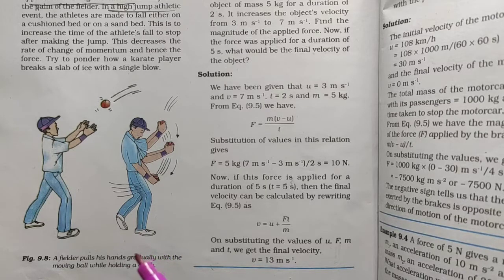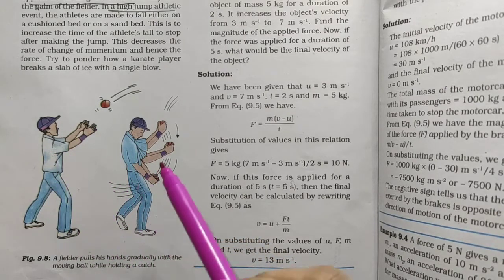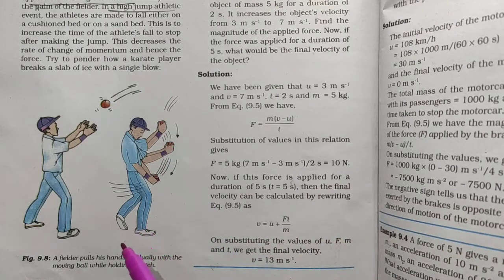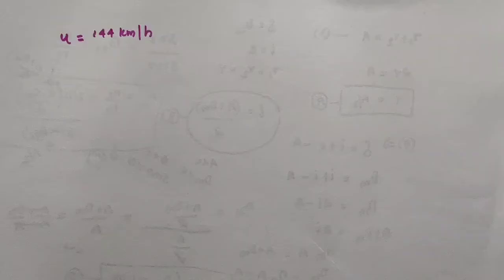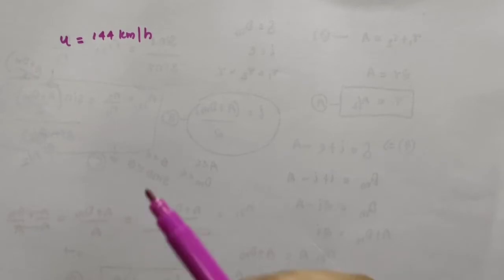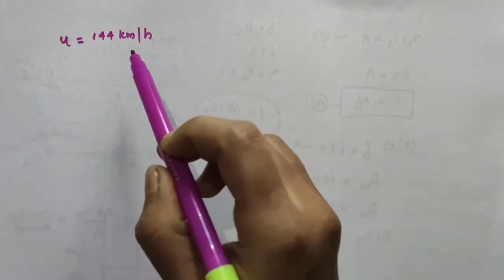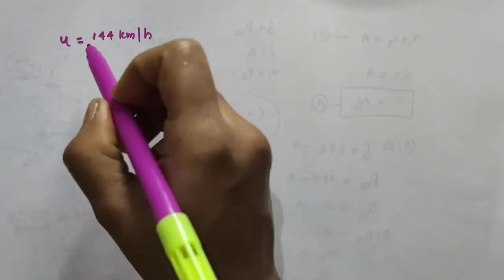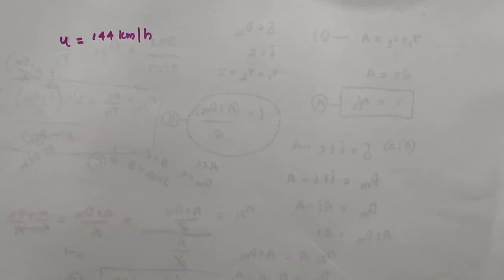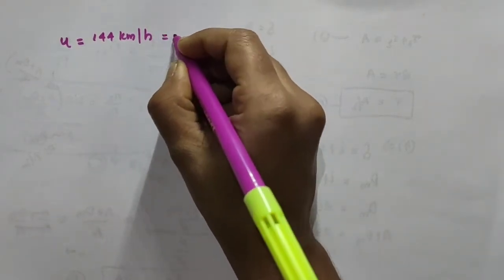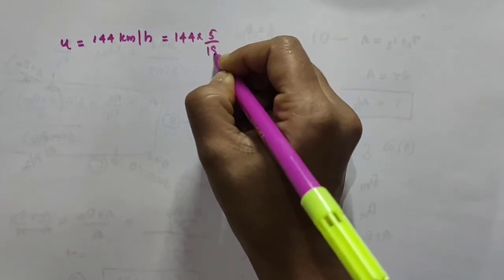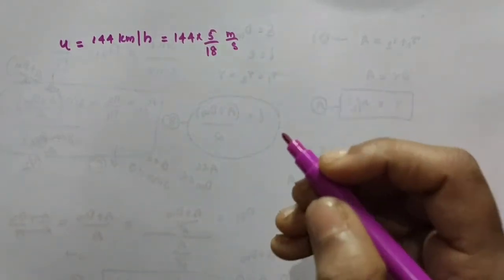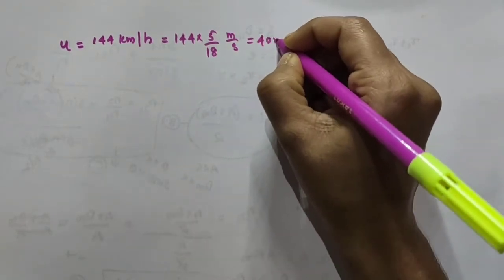Newton's second law of motion is often seen in action in our everyday life. You might have noticed that while catching a fast moving cricket ball, the fielder gradually pulls his hands backwards with the moving ball. Why is he doing so? Let the initial velocity of the fast moving cricket ball be 144 km per hour. Converting this into the SI unit meter per second: 144 × 5/18 = 40 meter per second.